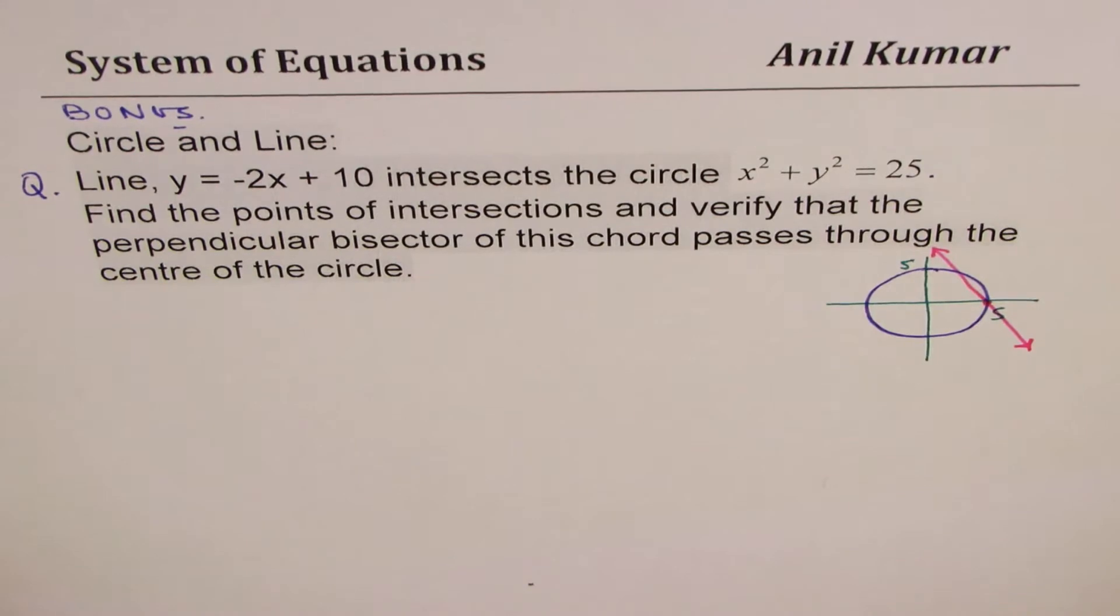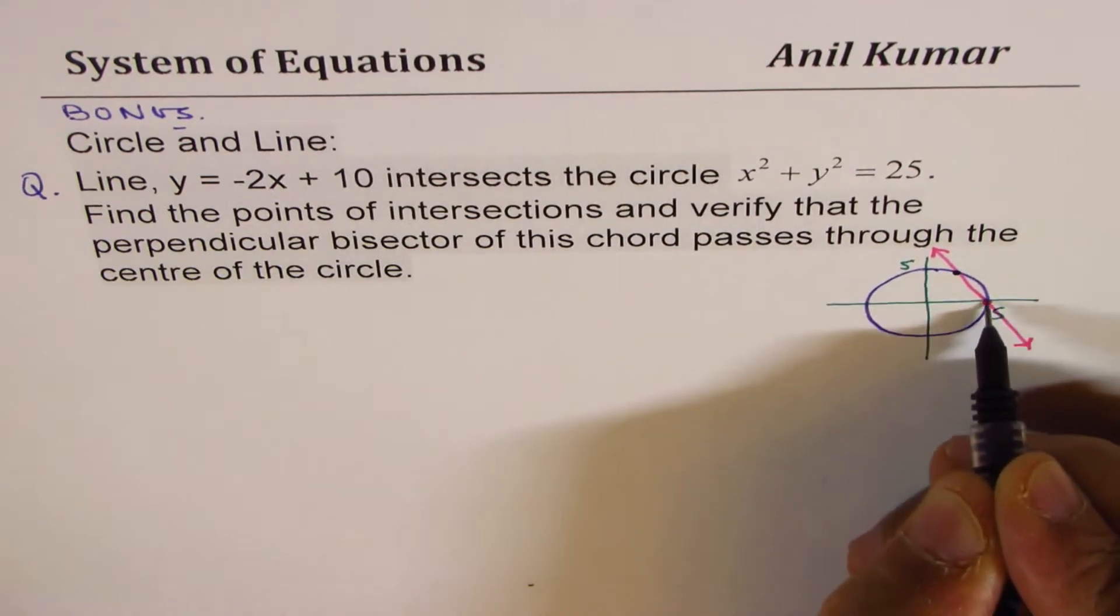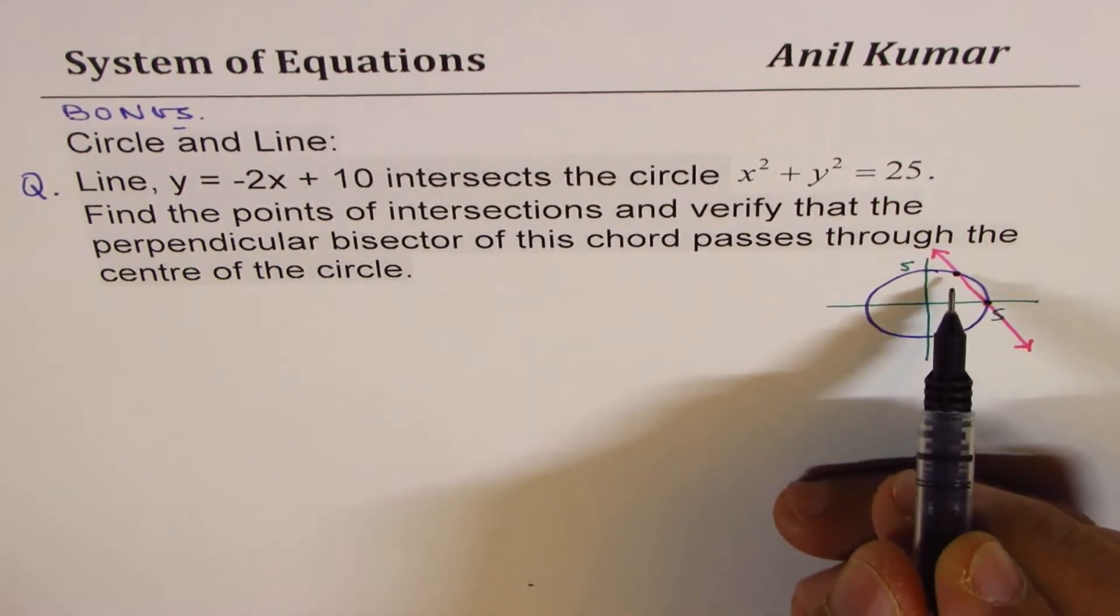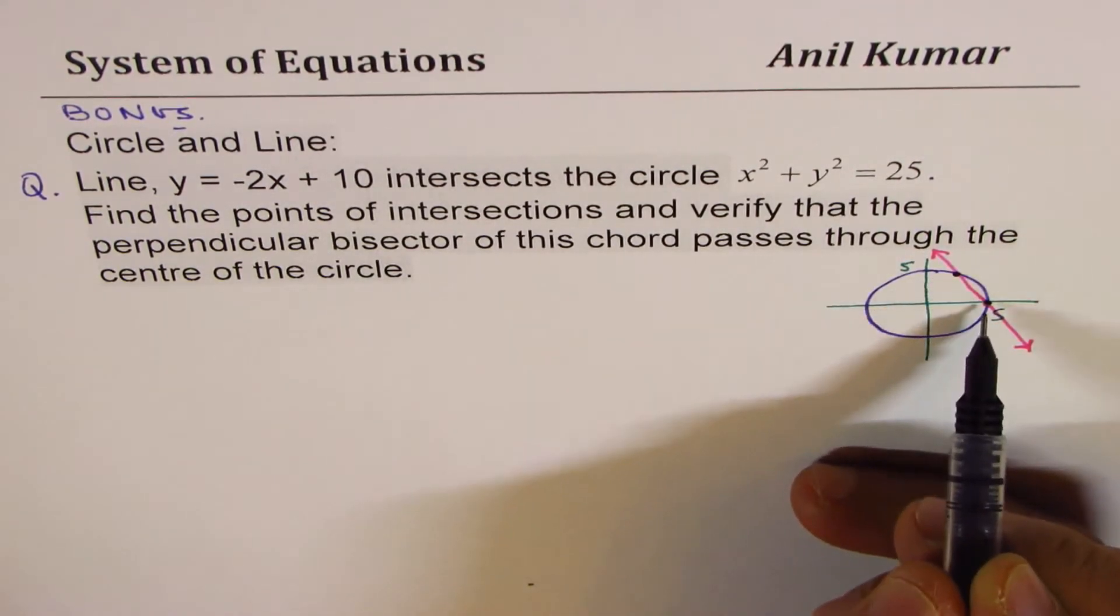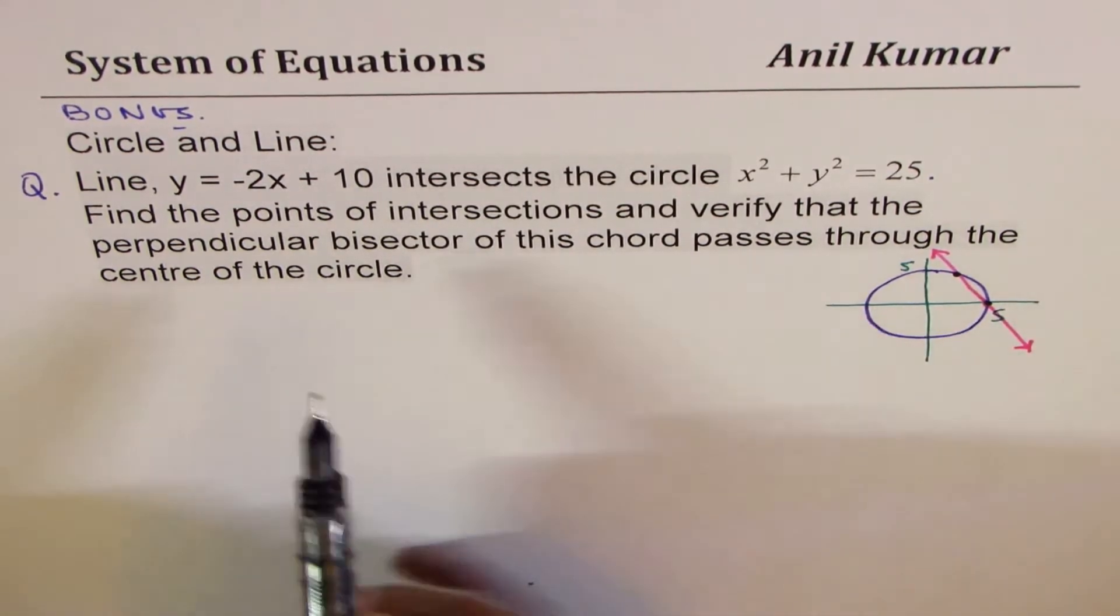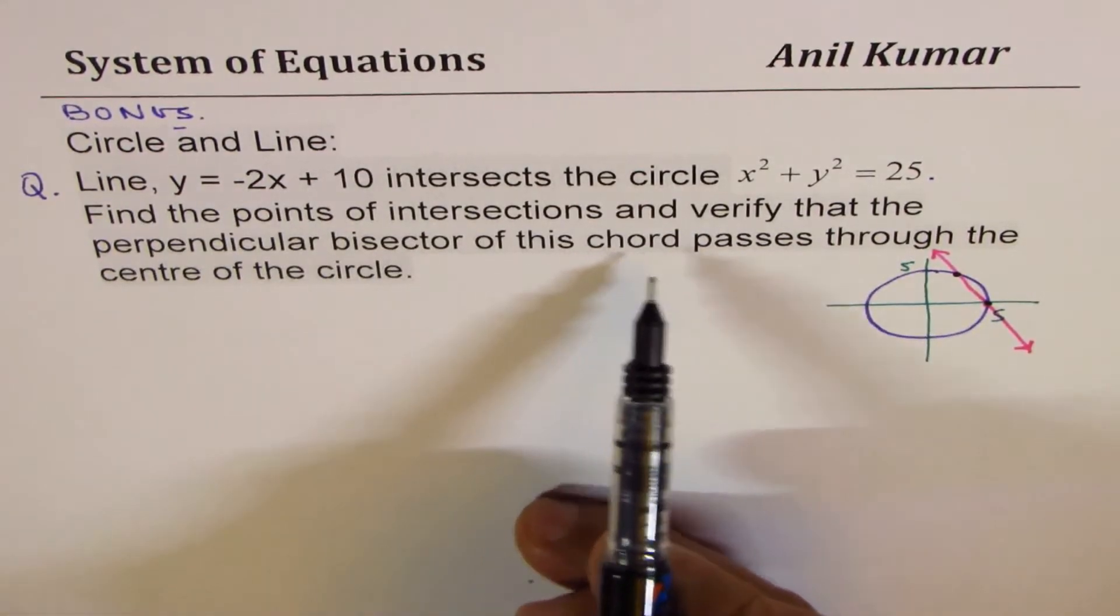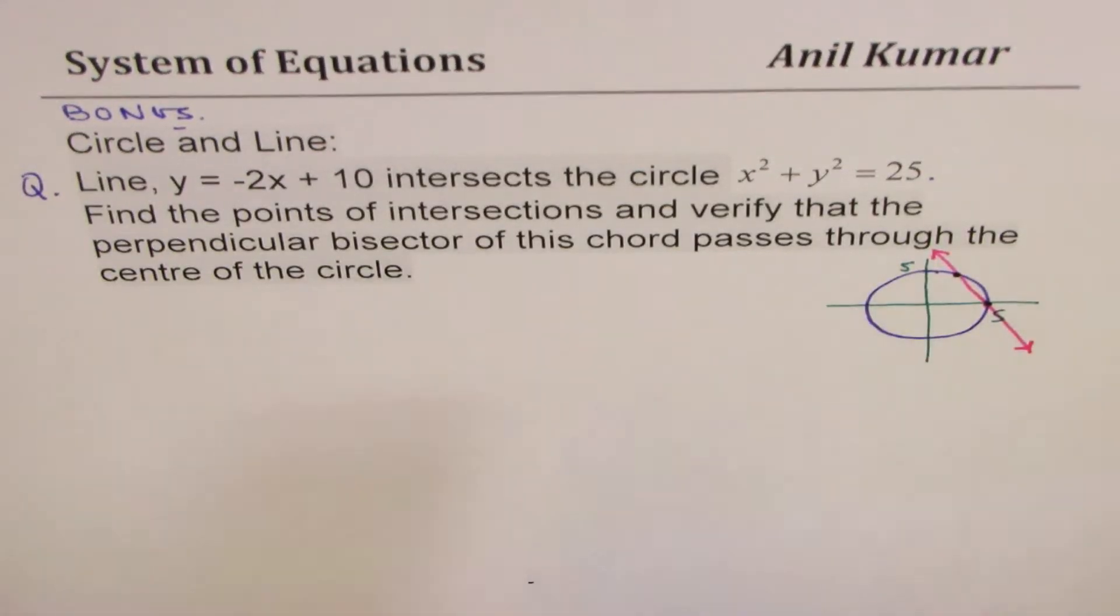If you notice, this line intersects the circle at two points. That portion in between the two points where it intersects is called the chord. Now the question is: verify that the perpendicular bisector of this chord passes through the center.